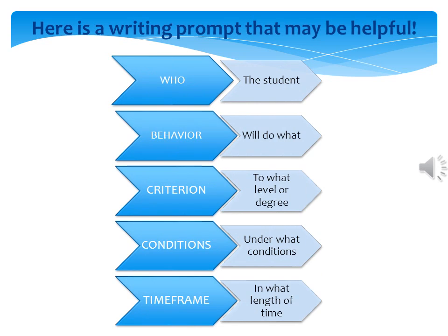Getting started on writing goals can be difficult. Here is a writing prompt that may be helpful. On the left-hand side, we have: who, behavior, criterion, conditions, and timeframe. And on the right: the student, will do what, to what level or degree, under what conditions, and in what length of time.